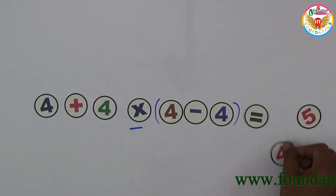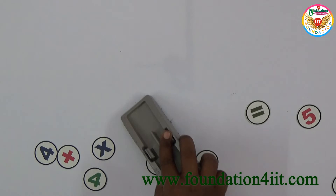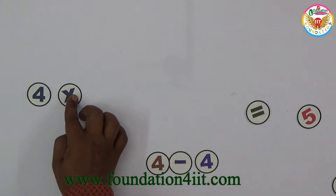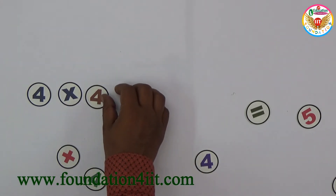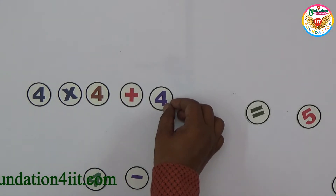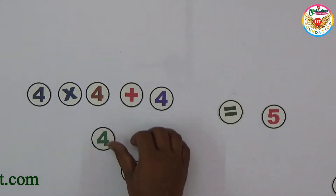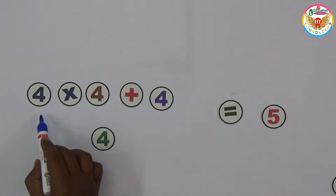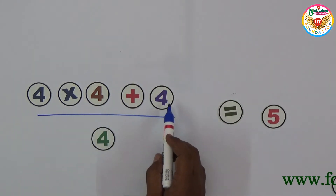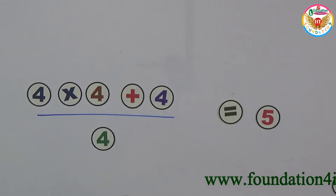To get equal to 5 using all four fours: 4 times 4 is 16, 16 plus 4 is 20, and 20 divided by 4 equals 5. So (4 × 4 + 4) / 4 = 5.